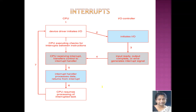Coming next, we are going to discuss about interrupts. An interrupt is a signal which is generated and alters the normal execution of any computer program. Interrupts can be both software interrupts or hardware interrupts. There is a possibility for hardware to trigger an interrupt at any time. Interrupts are triggered by sending a signal to the CPU through the system bus.